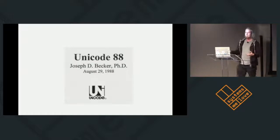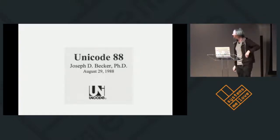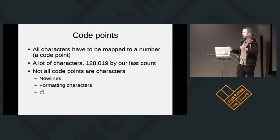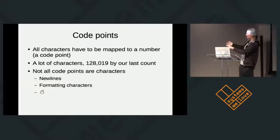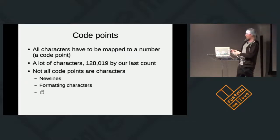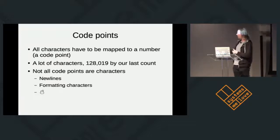Obviously we need a solution to the problem of multiple script systems. What was came up with was Unicode 88, invented in 1988. It basically says: take all of the world's various characters, scripts, control characters, and map them onto a number — called the code point. It turns out there are a ton of characters in the world: 128,219 by the last count. It also includes things like newlines, formatting characters, and Unicode snowmen, because obviously you need Unicode snowmen.